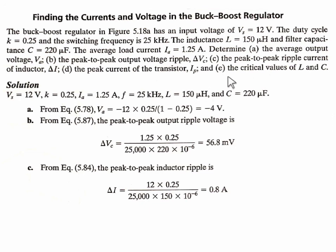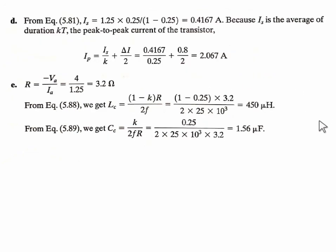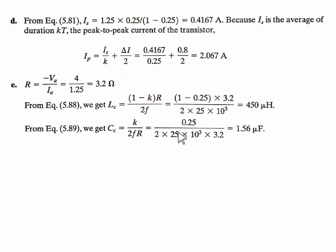The critical inductance Lc = (1-K)·R/(2F). Load resistance R = |Va|/Ia = 4/1.25 = 3.2 Ω. Substituting: Lc = 0.75 × 3.2/(2 × 25 kHz) = 48 µH. Critical capacitance Cc = K/(2·F·R) = 0.25/(2 × 25 kHz × 3.2) = 1.56 µF.